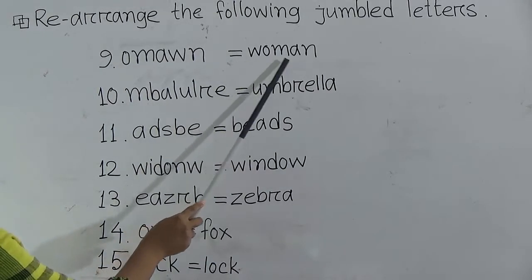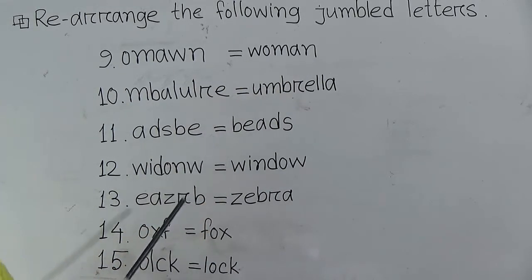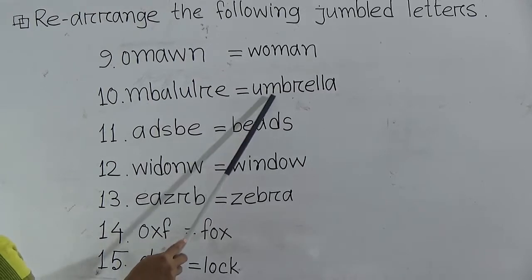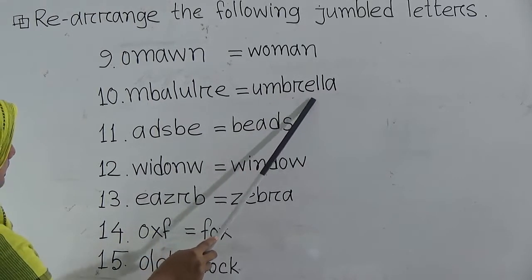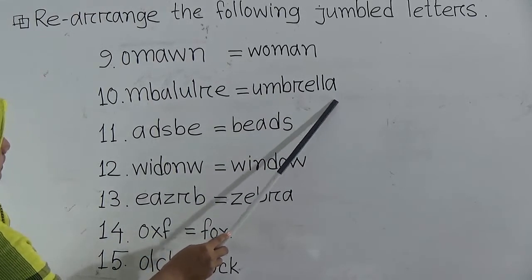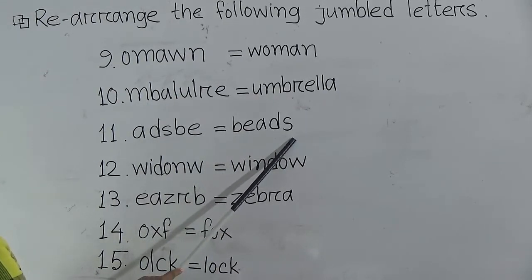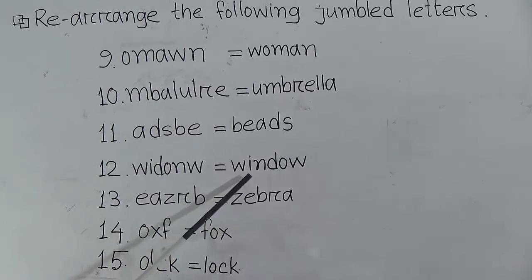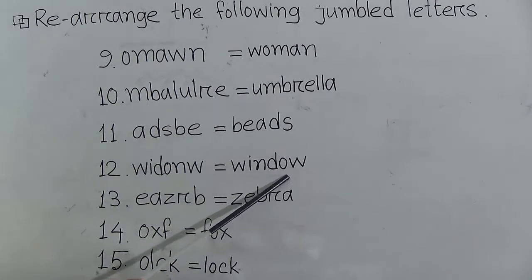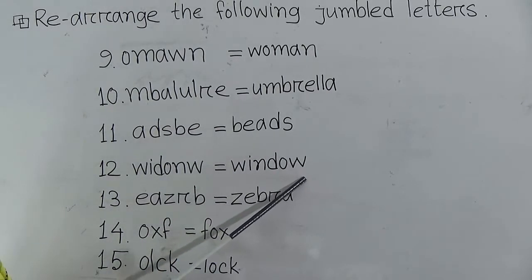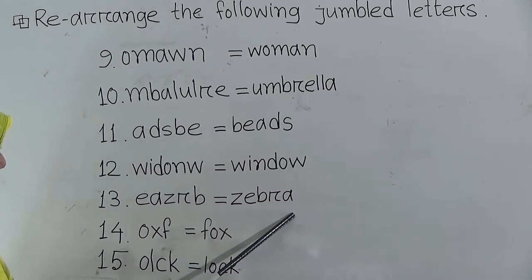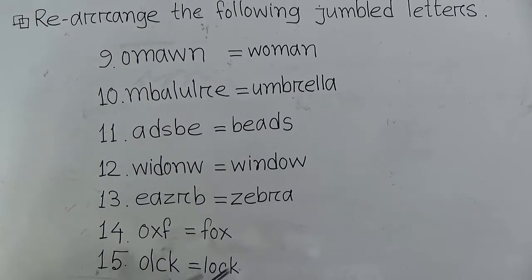Let's review all the answers: Number 9 — W-O-M-A-N, woman. Number 10 — U-M-B-R-E double L-A, umbrella. Number 11 — B-E-A-D-S, beads. Number 12 — W-I-N-D-O-W, window. Number 13 — Z-E-B-R-A, zebra. Number 14 — F-O-X, fox. Number 15 — L-O-C-K, lock.